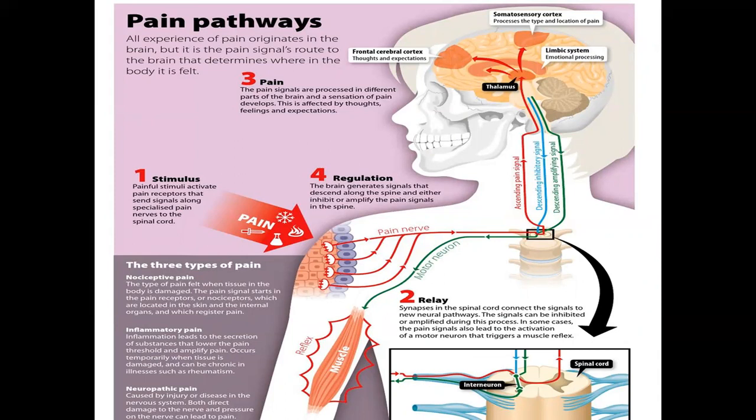Second, there is a relay synapse in the spinal cord that connects the signal to the neural pathway. The signal can be inhibited or amplified during this process. In some cases, the pain signals also lead to activation of a motor neuron that triggers the muscle reflex.